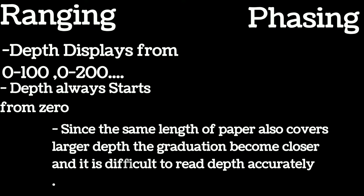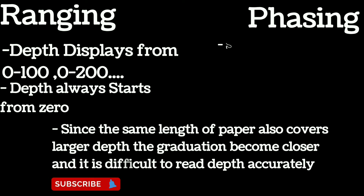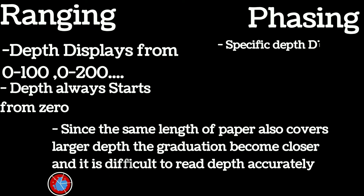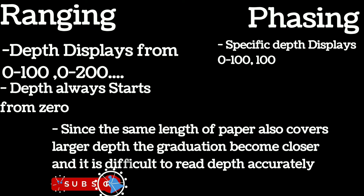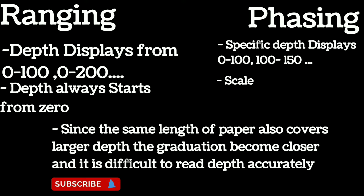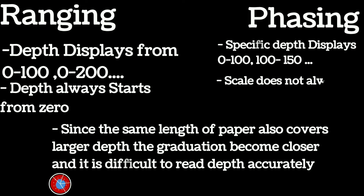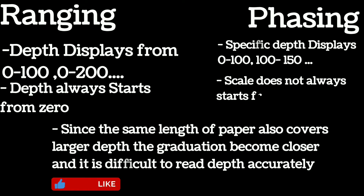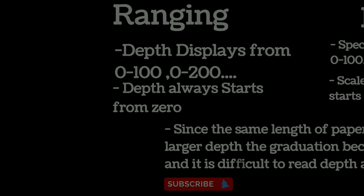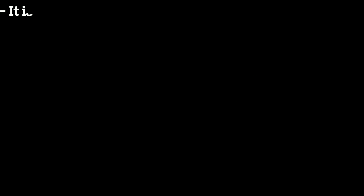To avoid this, we use phasing, in which specific depth displays are used — like zero to one hundred, one hundred to two hundred, and so on. The scale does not always start from zero in phasing.